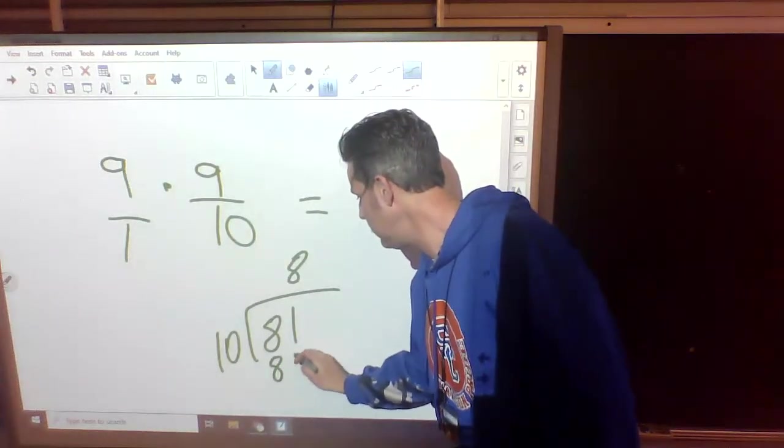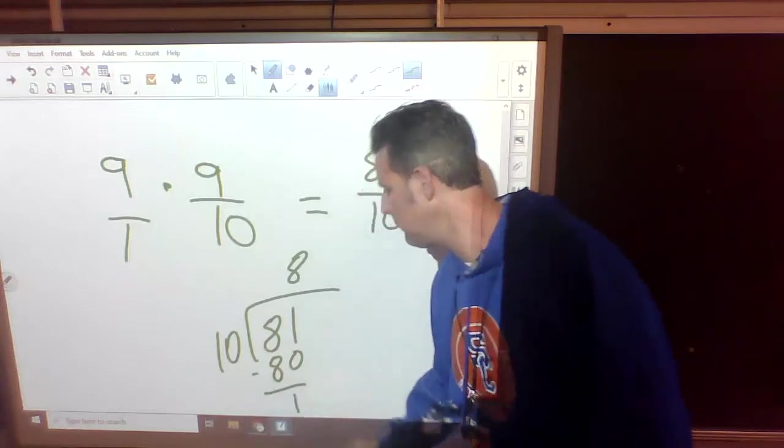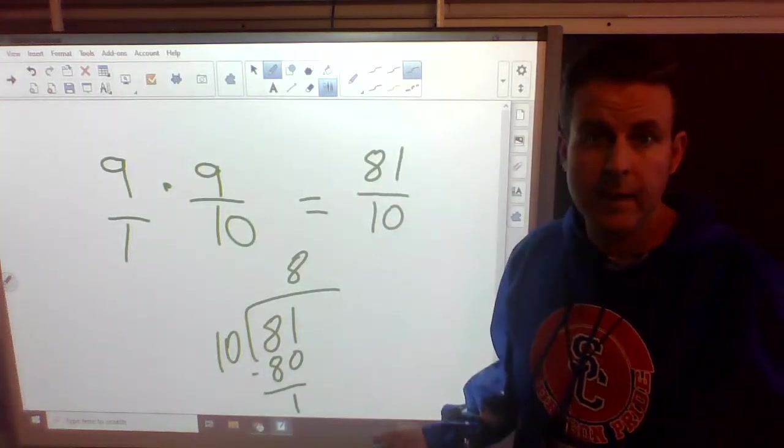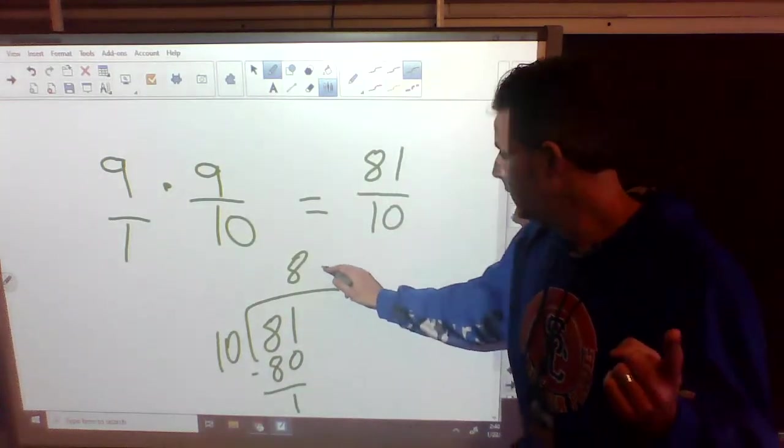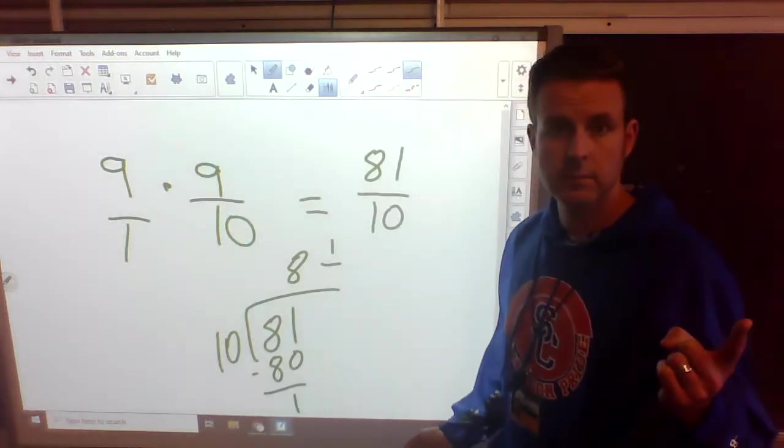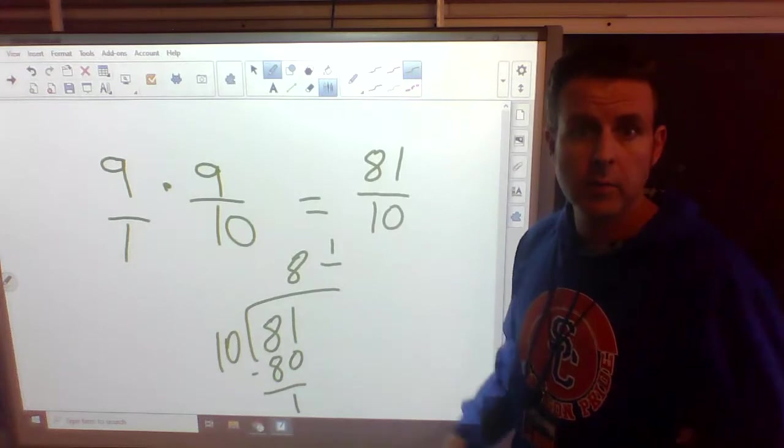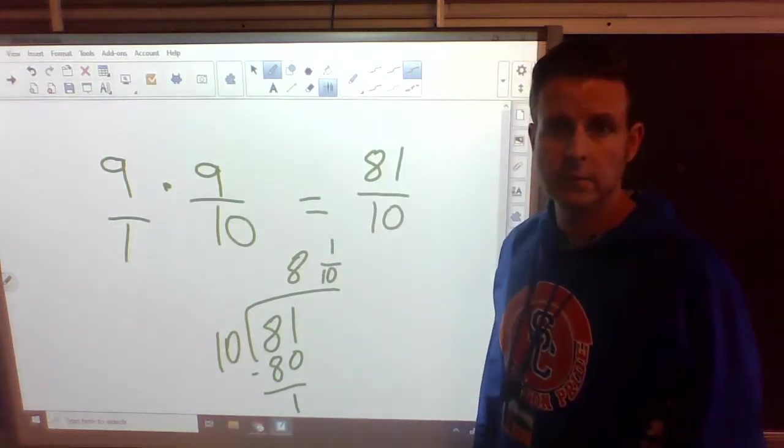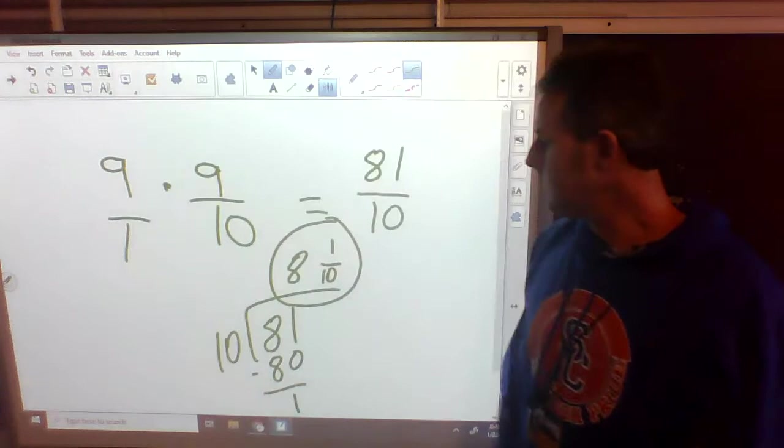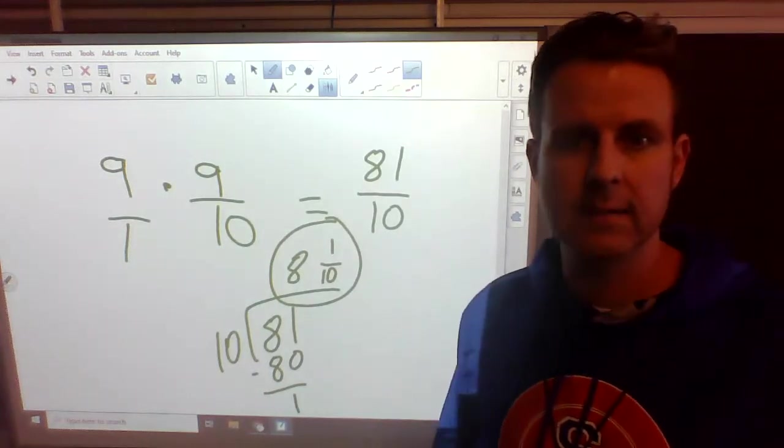8 times. 8 times 10 is 80. We subtract. We have one piece left over. Still our piece. We just can't make a whole out of it. So we put it over the top number of our fraction. It's our piece left over, the 1. Over what? It's still 10. We still need 10 pieces for our whole. So our answer is we can make 8 and 1 tenth.